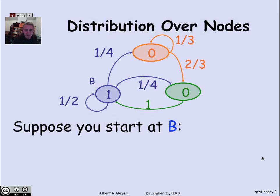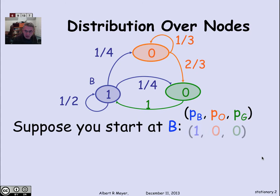Here is the graph with states blue, orange, and green that we've seen before. Suppose I start at state B and ask: what's the probability of being at each of these states after one step? I'm interested in PB, PO, and PG — the probability of being at state B, state O, and state G. The sum of the probabilities is 1. Initially, when I'm at state B, the probability of being at B is 1 and the other two are 0.